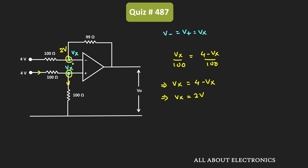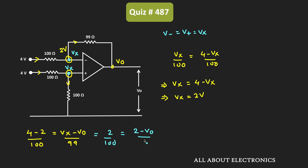Now let's apply KCL at the inverting node to find the output voltage. We can write: 4 minus 2V divided by 100 Ohm equals Vx minus Vout divided by 99 Ohm, where Vx equals 2V. So we get 2 divided by 100 equals 2 minus Vout divided by 99. This gives 0.02 times 99 equals 2 minus Vout, so Vout equals 2 minus 1.98, which equals 0.02V.